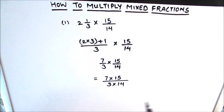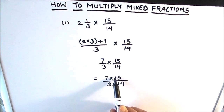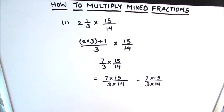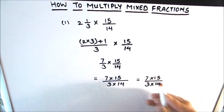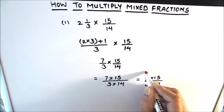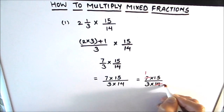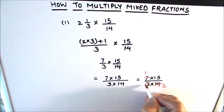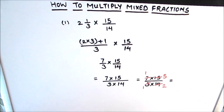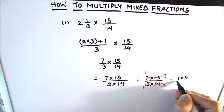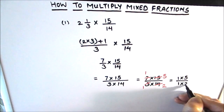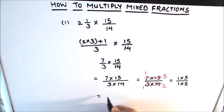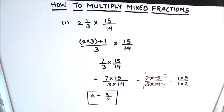Before multiplying the two numbers and writing the answer, we first check whether this whole thing can be simplified. We check for any common factor between the numerator and denominator. We see there is a common factor of 7: 7 times 1 is 7 and 7 times 2 is 14. Another common factor is 3: 3 times 1 is 3 and 3 times 5 is 15. Now we have 1 times 5 in the numerator and 1 times 2 in the denominator, so 1 times 5 is 5 and 1 times 2 is 2. This is our final answer — 5 upon 2.